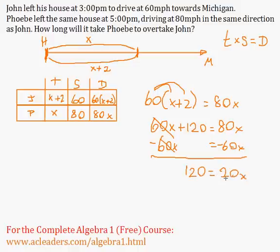Then we can divide both sides by 20. These cancel out. And x is just going to be 120 divided by 20, which is 6. So it takes Phoebe 6 hours to overtake John.